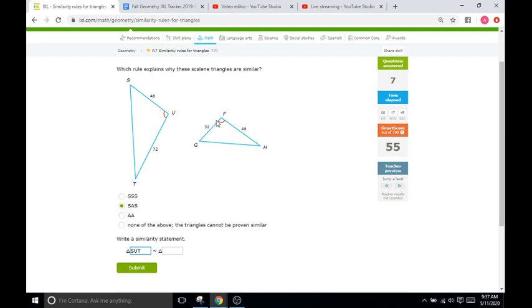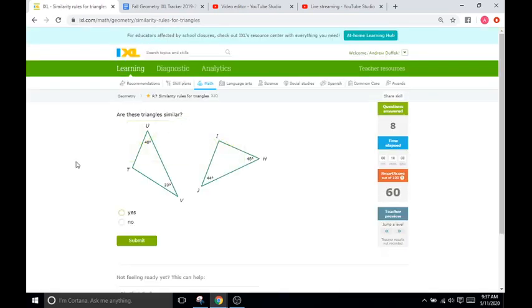So, we'll do G, F, and H. Because, remember, the angles that correspond and the sides that correspond have to be written the same place in the similarity statement. So, that should be good. We'll click submit. Cool.